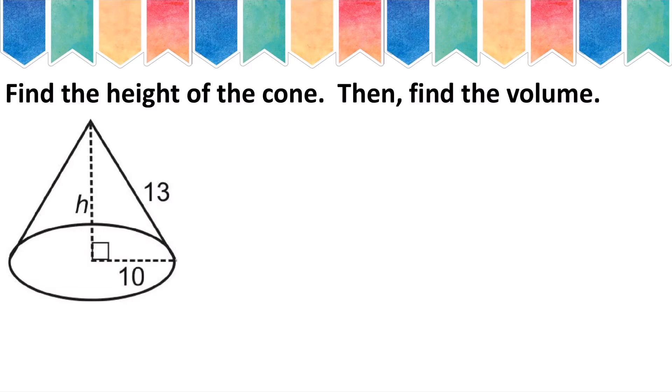So my picture already has our height labeled as h, and first we will need to find this height. And we do that by using Pythagorean theorem. As a reminder, Pythagorean theorem is a squared plus b squared equals c squared. So for this picture, to calculate the height of the cone, I will need to do h squared plus 10 squared equals 13 squared.